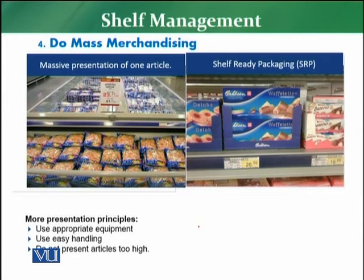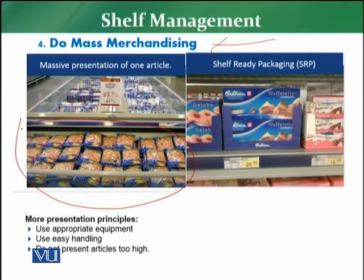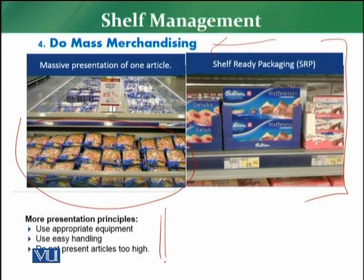The fourth basic principle is mass merchandising. The retailer's focus should be on presenting products following the bulk principle — a massive presentation of one article. For example, displaying on a chest freezer massively with one article is one way. The second is shelf-ready packaging, where products are openly available on the shelf so the customer can easily pick them up.